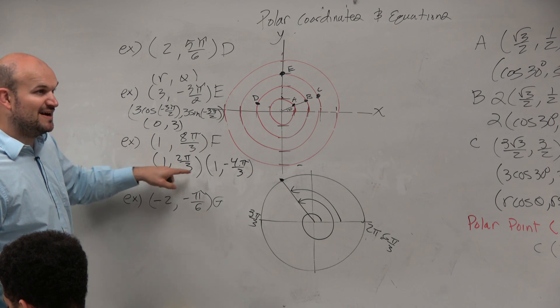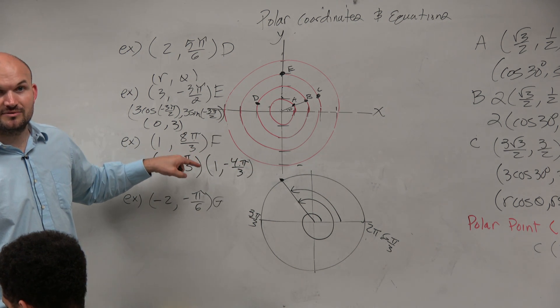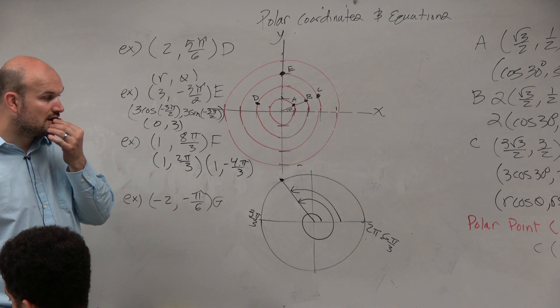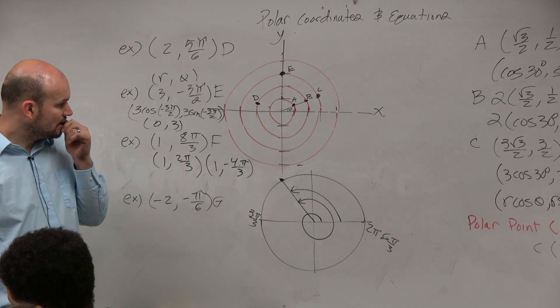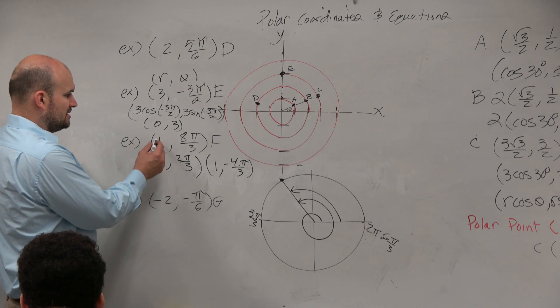And could we find infinitely many points that are exactly the same? Yeah, that's really cool. Isn't it? Does it matter if the radius is 1 to find coterminal angles or not? No. I mean, this could all have been done 2.